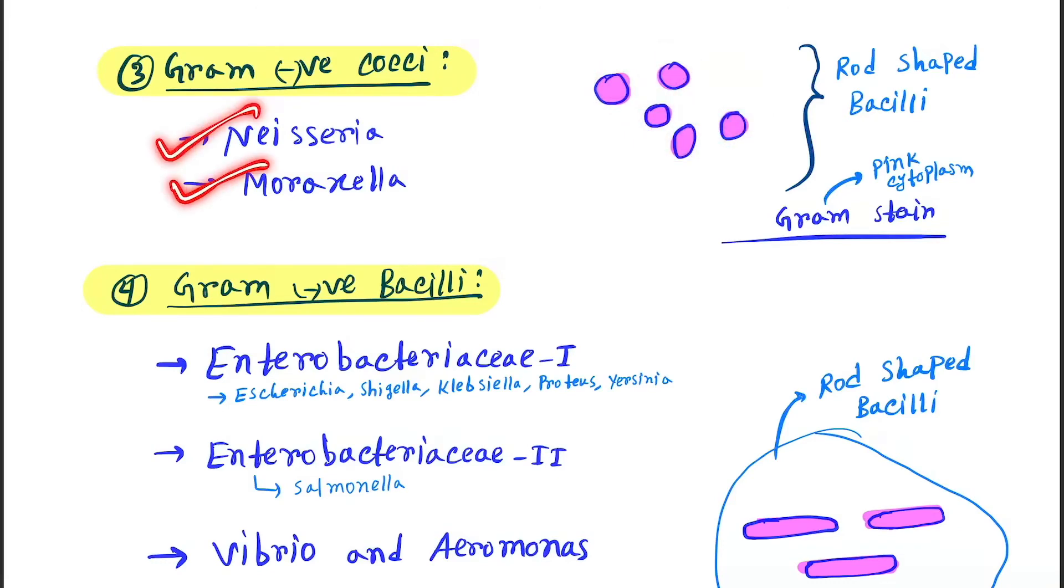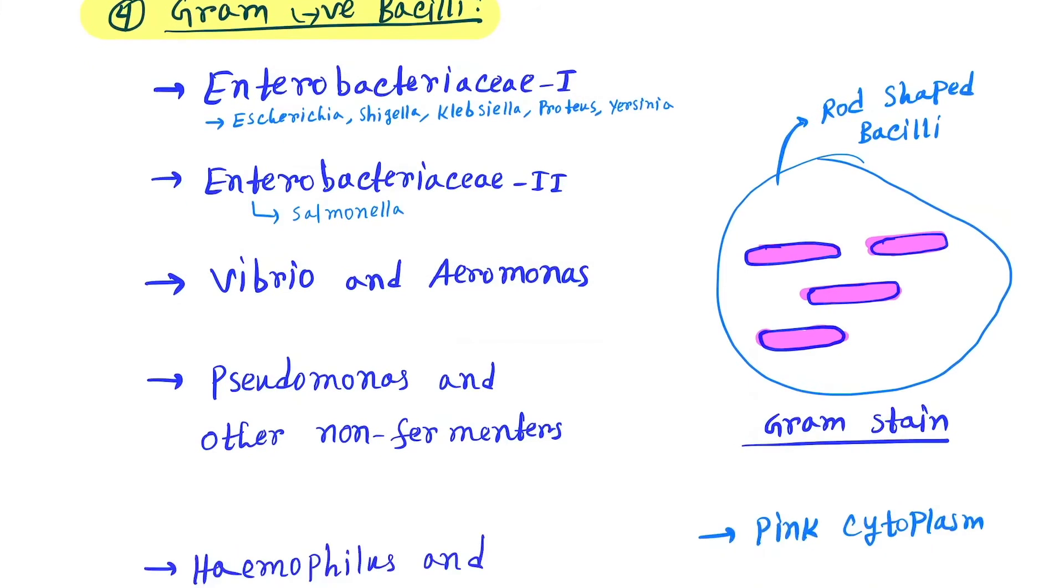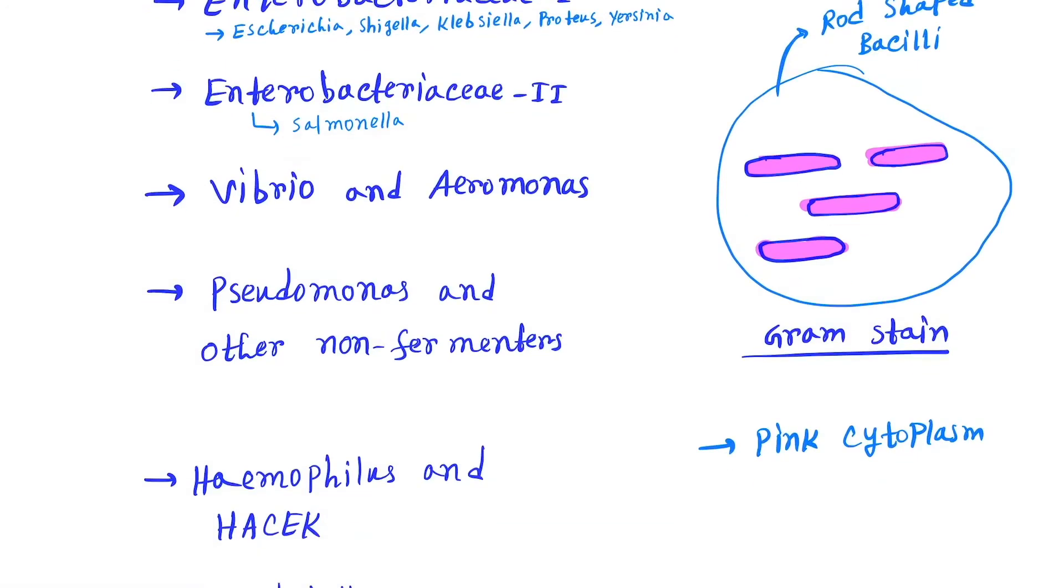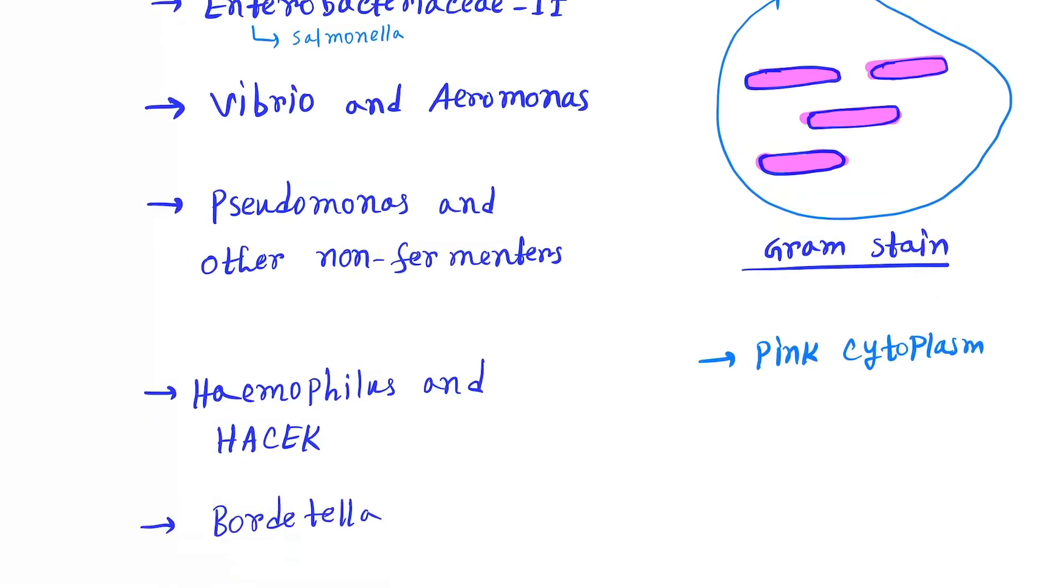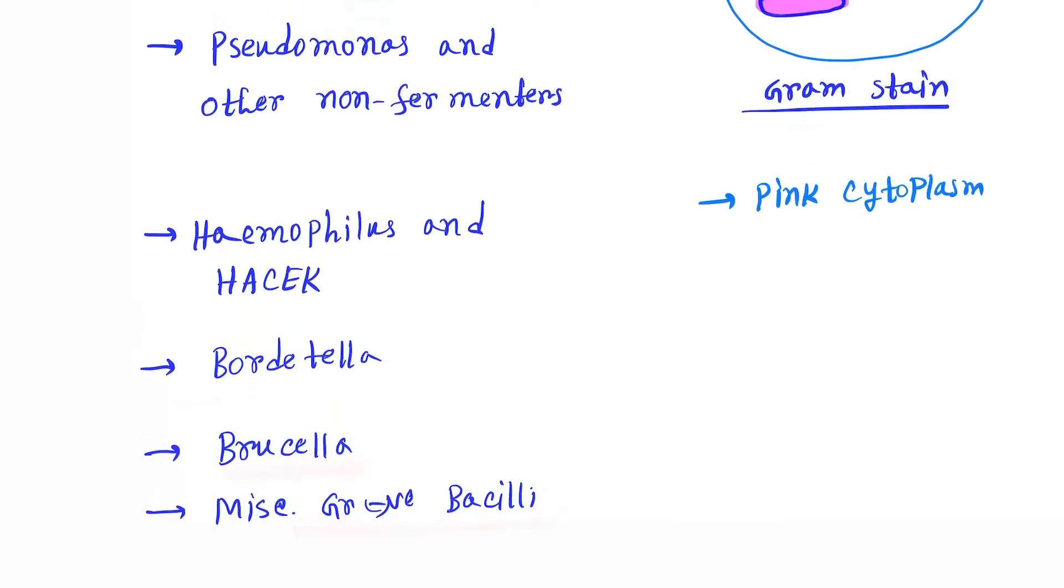Next is gram negative bacilli. The rod shaped bacteria will contain pink color cytoplasm. Examples are Enterobacteriaceae-I (Escherichia, Shigella, Klebsiella, Proteus, and Yersinia), Enterobacteriaceae-II (Salmonella), Vibrio and Aeromonas, Pseudomonas and other non-fermenters, Haemophilus and HACEK group, Bordetella, Brucella, and miscellaneous gram negative bacilli.